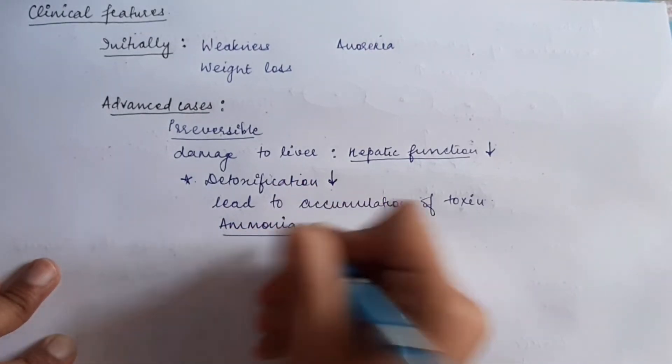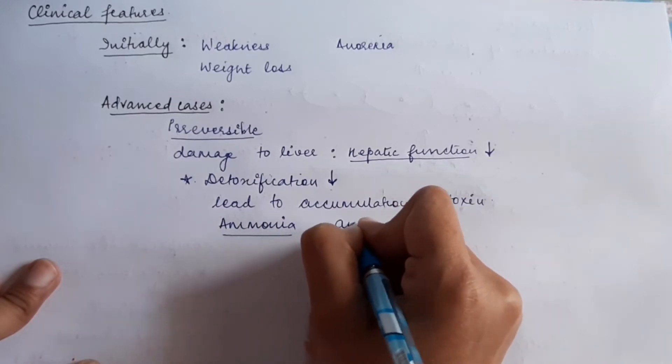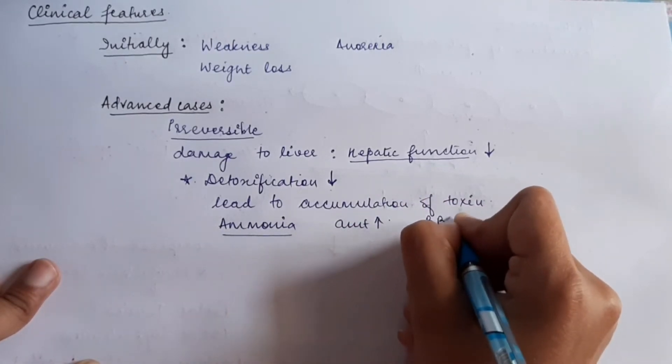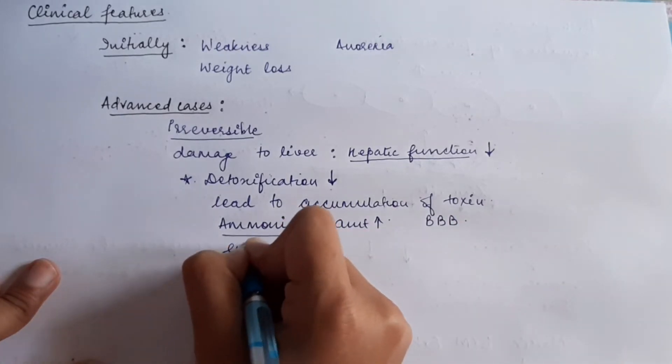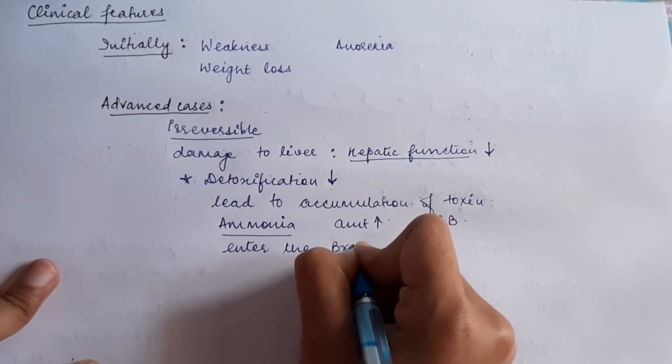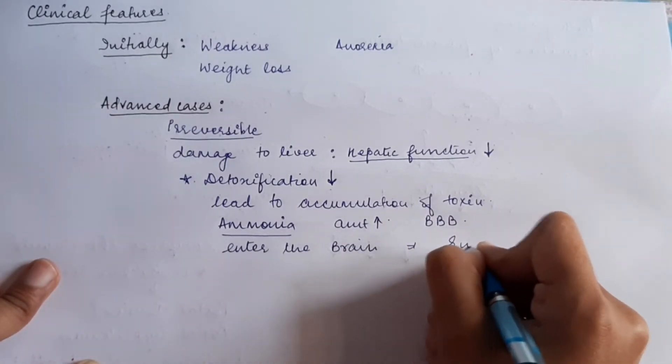The most common example is ammonia. It accumulates in the body. Gradually, its amount increases. It can cross the blood-brain barrier, enter the brain, and cause encephalopathy.